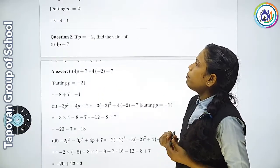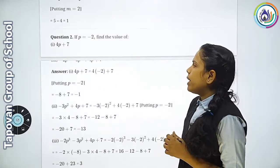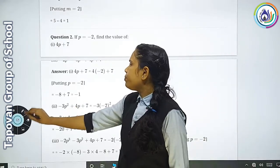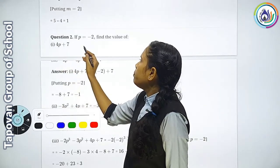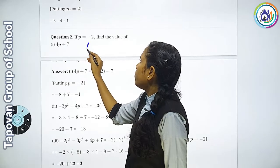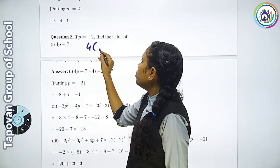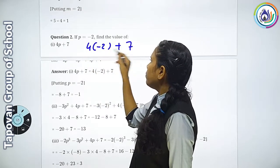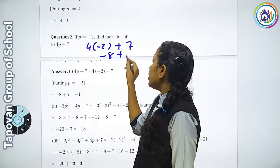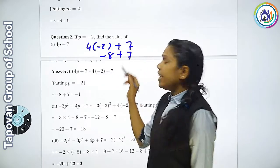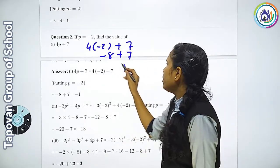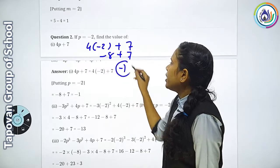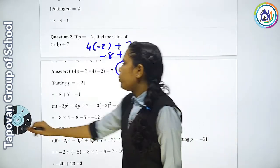Question number 2: p is equal to minus 2. हमें value रखनी है। 1st value: 4p+7. यह 4×(-2)+7=minus 8+7. Bigger amount का sign minus है, तो answer minus 1.